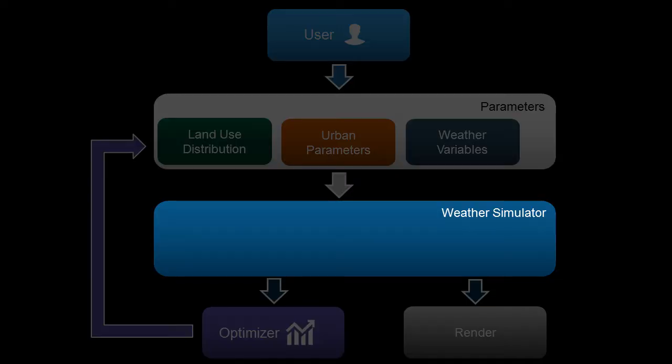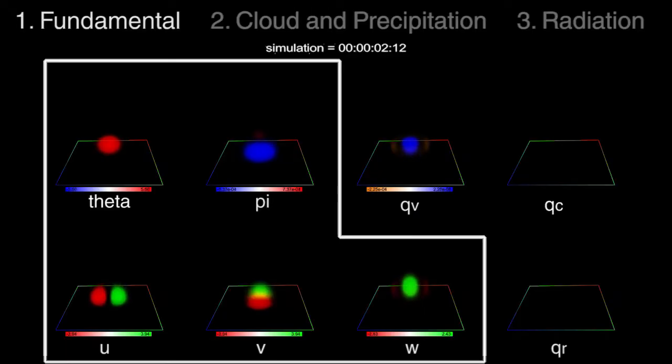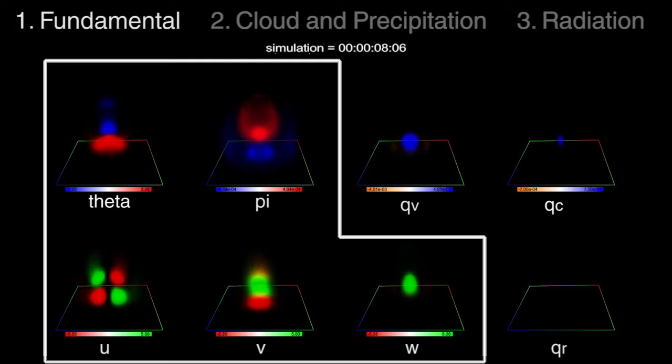Our weather simulator consists of fundamental component, cloud and precipitation component, and radiation component. The fundamental component models temperature, wind, and pressure, as well as advection, diffusion, and buoyancy.